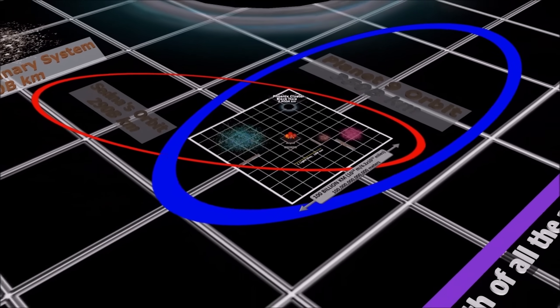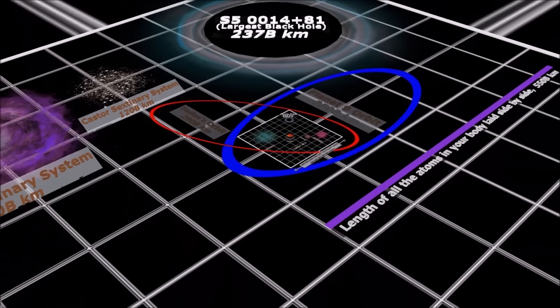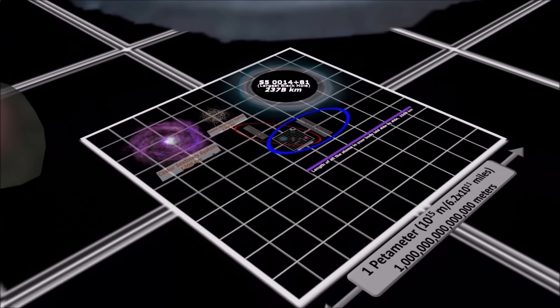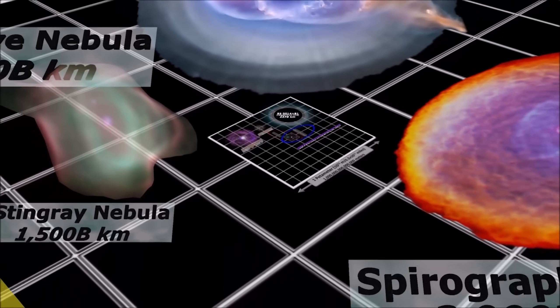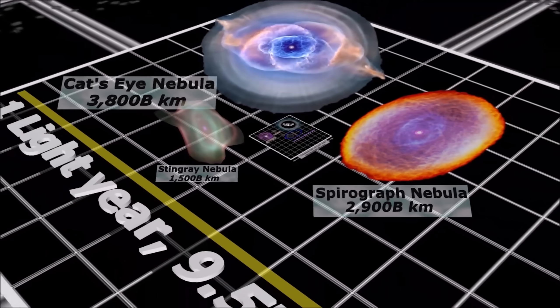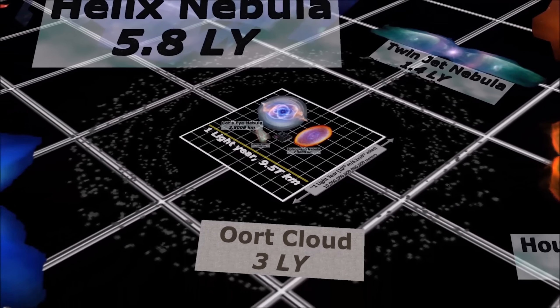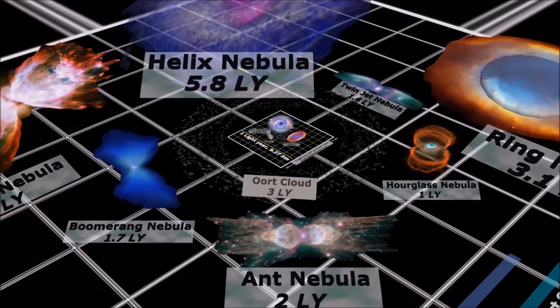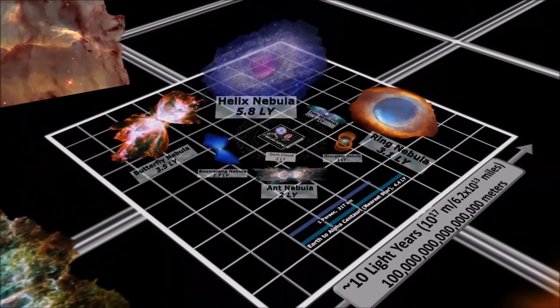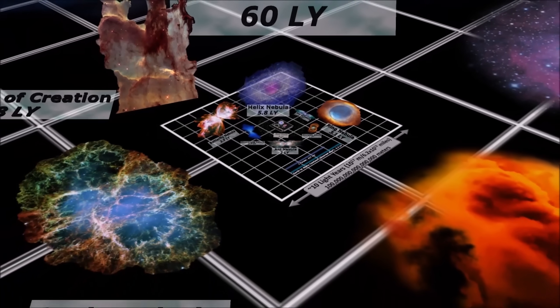Passing by Saturn's orbit, witness the largest black hole in the galaxy among these interstellar beauties. We have reached the distance light travels in a year, just reaching the nearest stars. At this scale, a space shuttle would take hundreds of millions of years to cover.